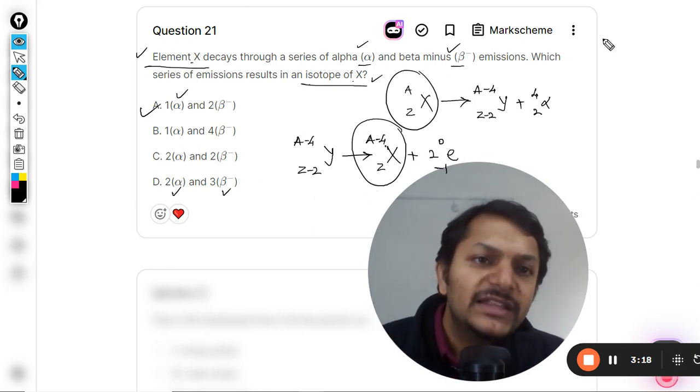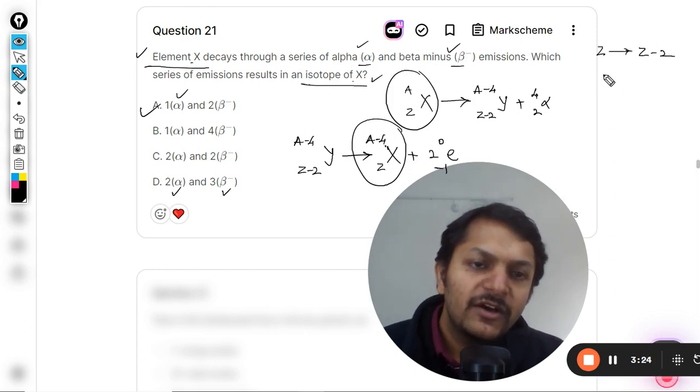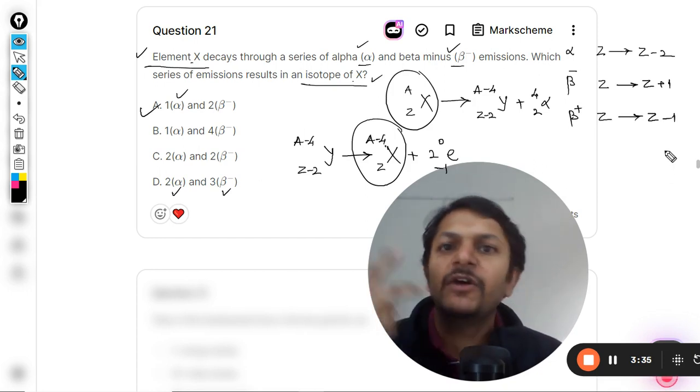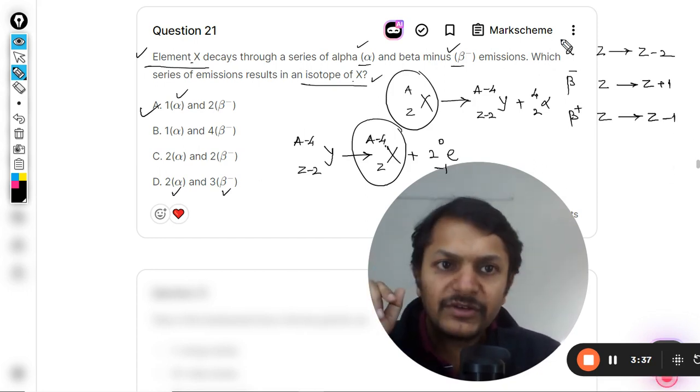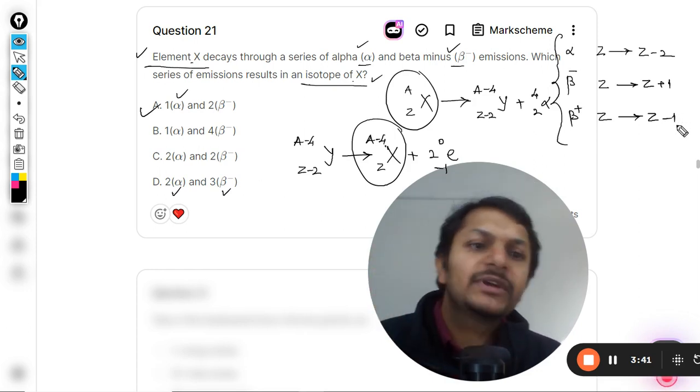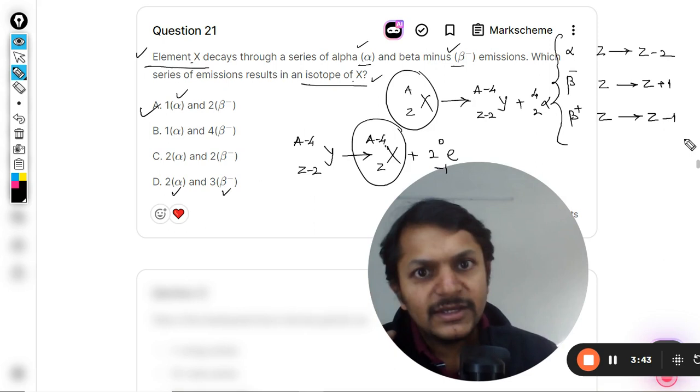You have to remember that when alpha decay is happening, the atomic number decreases by two. When beta minus is happening, atomic number increases by one. And when beta positive decay is occurring, which is actually a positron, atomic number reduces by one. This is what you need to remember.